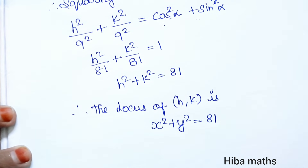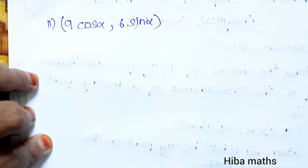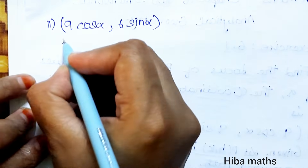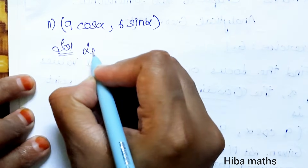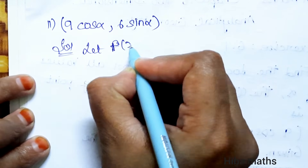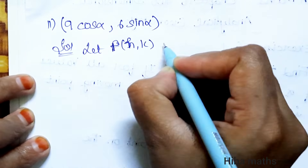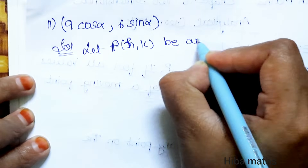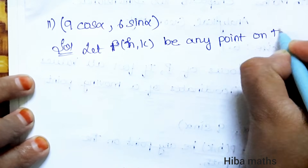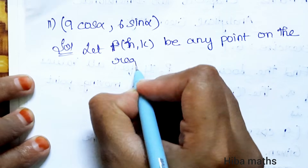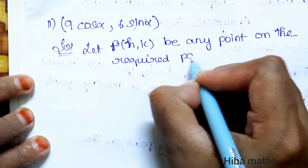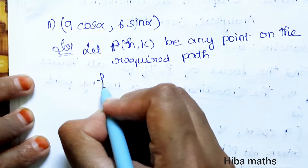Second subdivision: the coordinates are 9 cos alpha and 6 sin alpha. Let P(H, K) be any point on the required path.